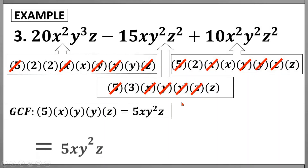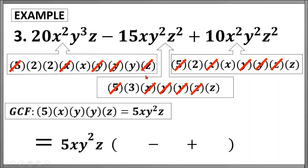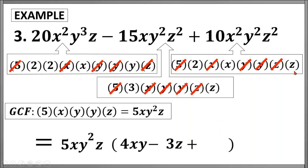We will write this GCF as one of the factors for our answer. For the second factor, leaving the minus sign and the plus sign, we will use the factors left in these three terms. For the first term we still have 2 times 2 times x times y, whose product is 4xy. In the middle term we still have 3 and z, whose product is 3z. For the last term we have 2 times x times z, which results in 2xz. So the answer is 5xy squared z times the quantity 4xy minus 3z plus 2xz. That's how we do the greatest common monomial factoring.